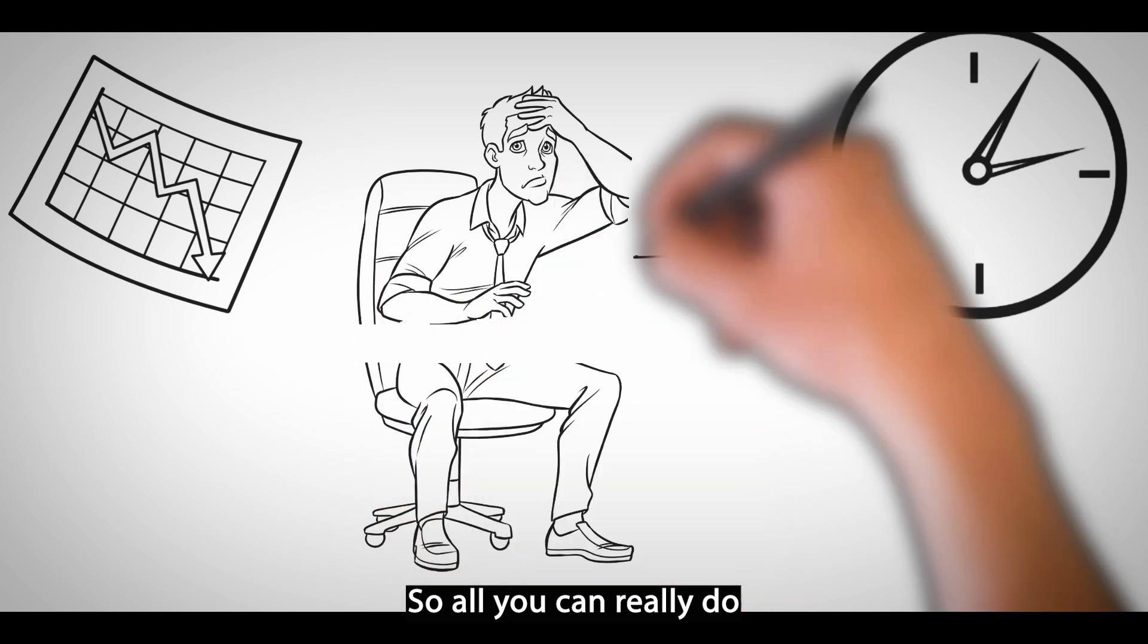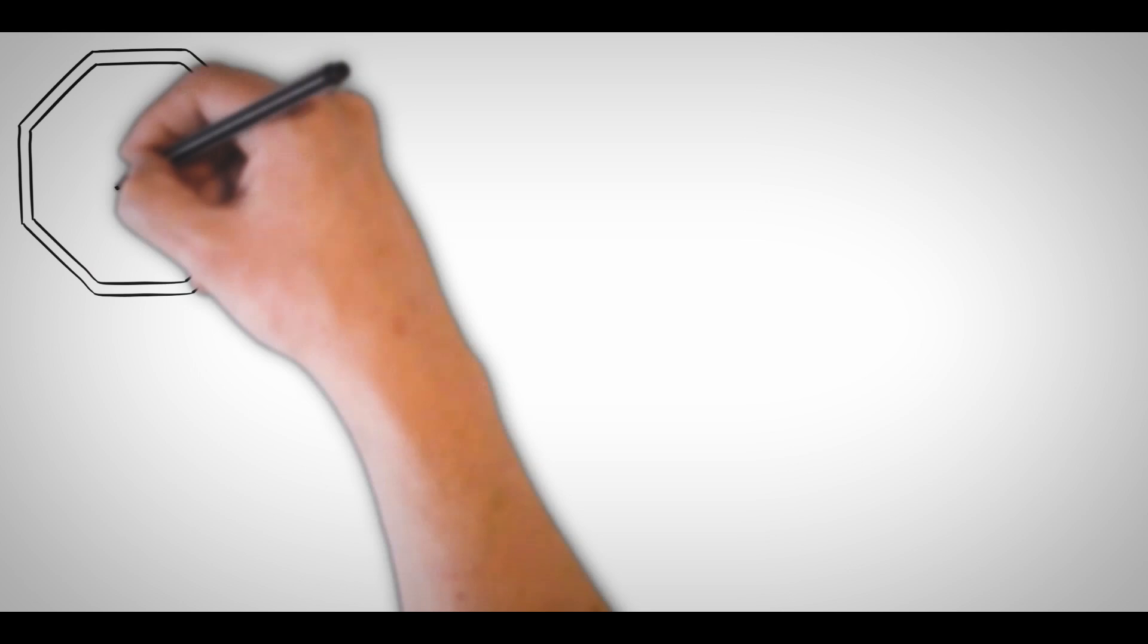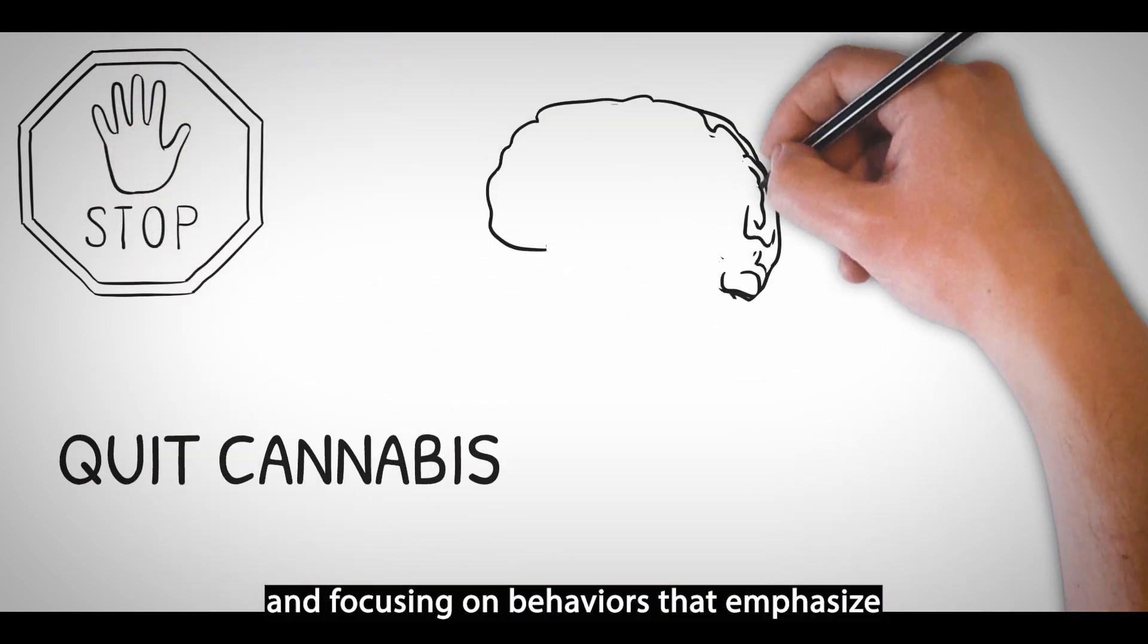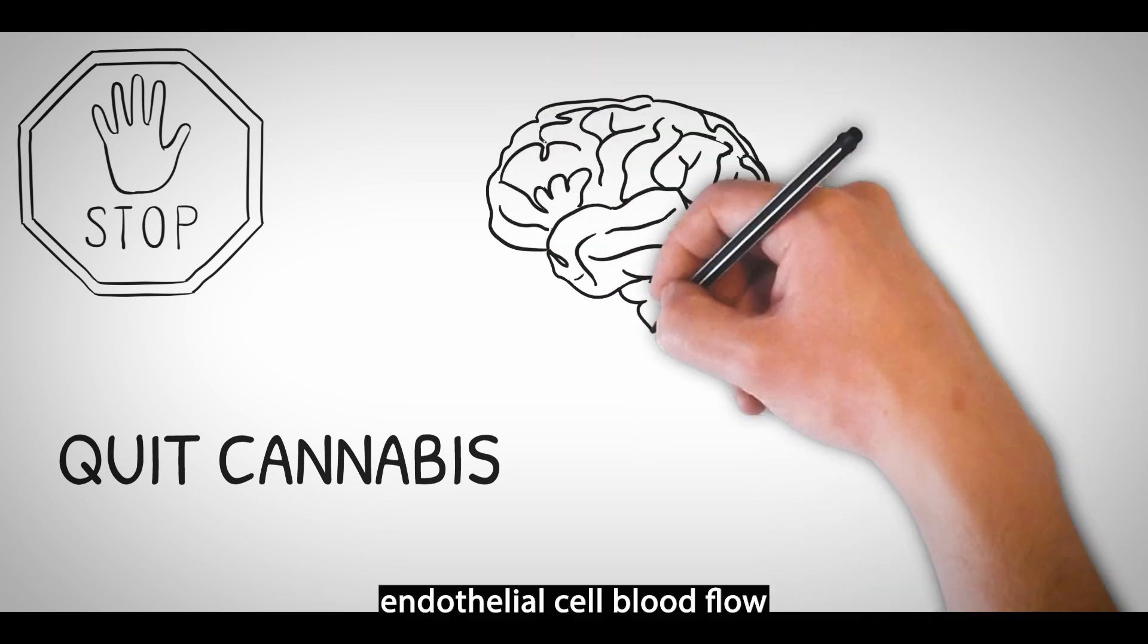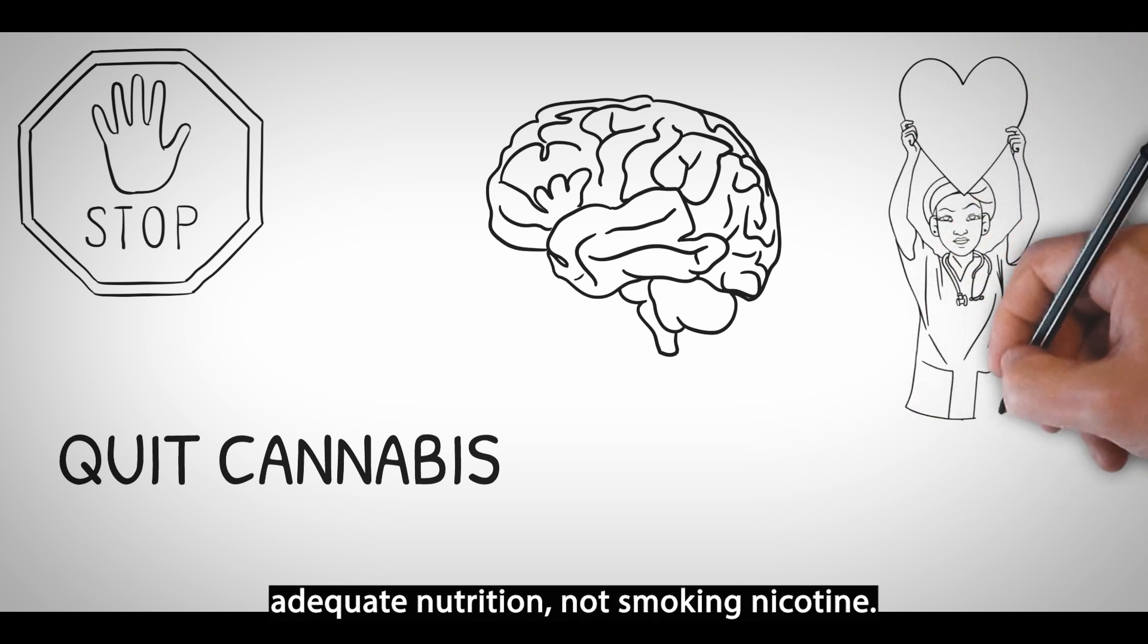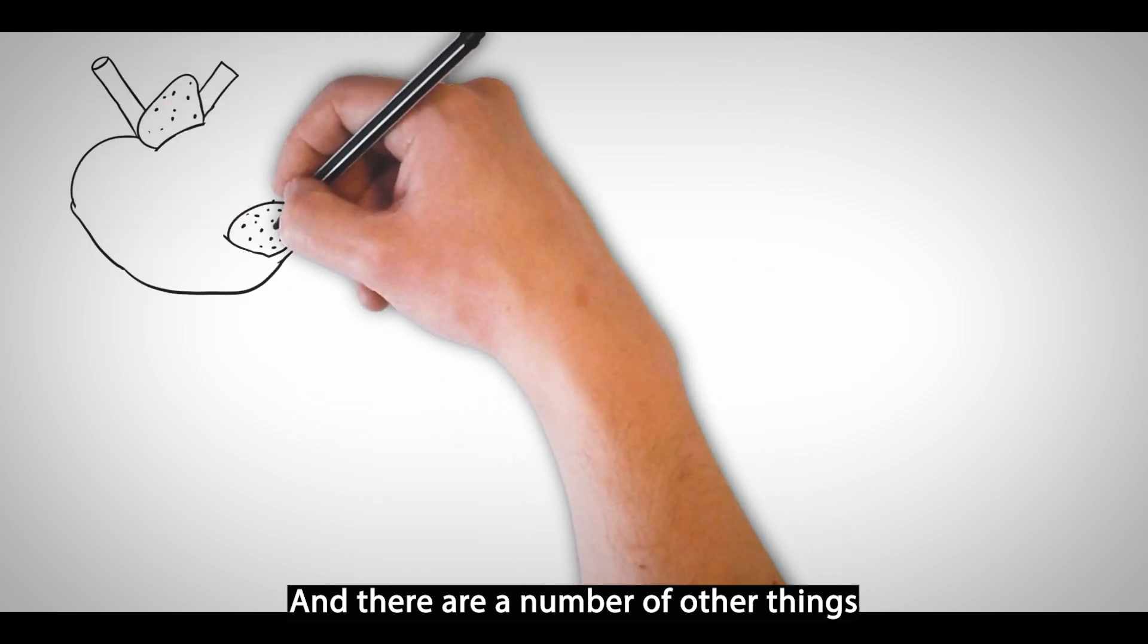All you can really do is try and emphasize, first of all, quitting cannabis in any form and focusing on behaviors that emphasize endothelial cell, blood flow, health to the brain. So that would be cardiovascular exercise, adequate nutrition, not smoking nicotine. And there are a number of other things that one can do.